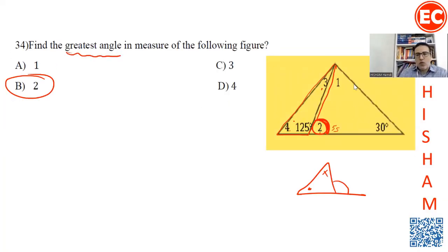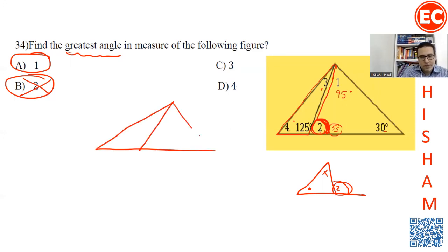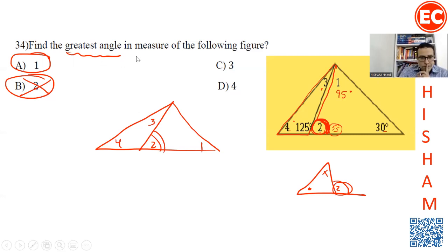The exterior angle is greater than the two non-adjacent interior angles. By calculating: angle 2 is 55 degrees, angle here is 30, so angle 1 (angle A) is 95 degrees. Angles 3 and 4 are smaller than angle 2 (55 degrees). So the greatest angle is actually angle 1, which is 95 degrees. If angle 1 was not in the choices, then angle 2 would be the greatest.